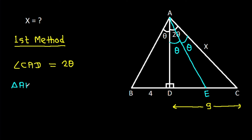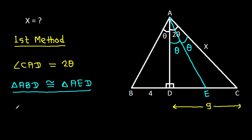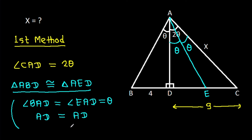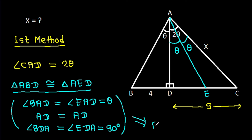Then angle ABD will be congruent to angle AED, because angle BAD equals angle EAD (that is theta), AD is common, and angle BDA equals angle EDA (that is 90 degrees). That means BD equals ED, and since BD is 4, ED will also be 4.